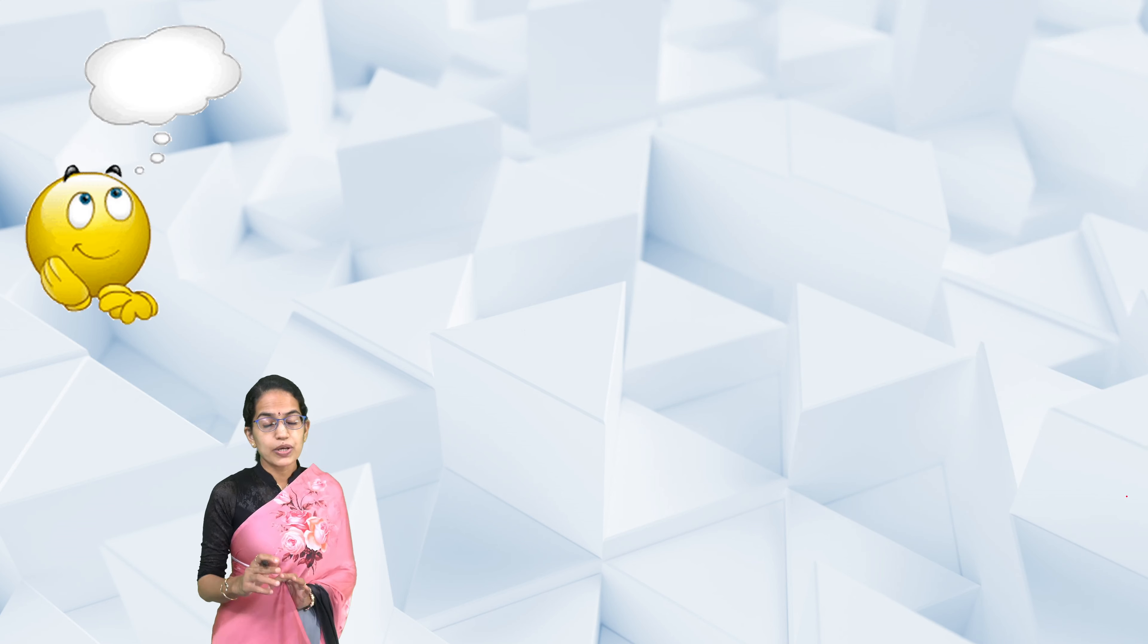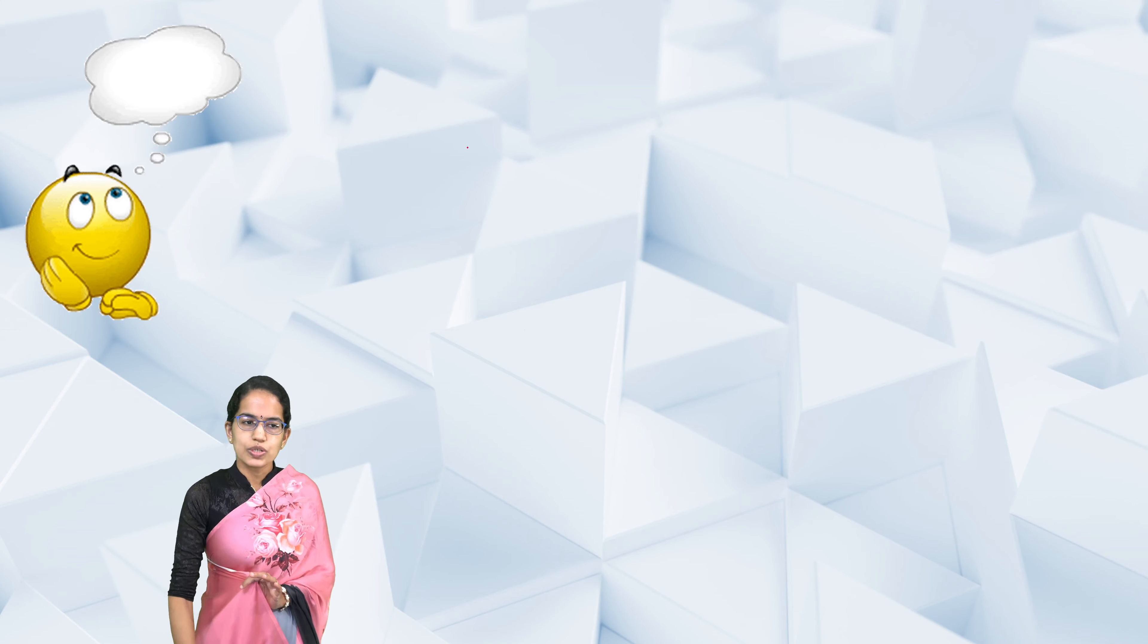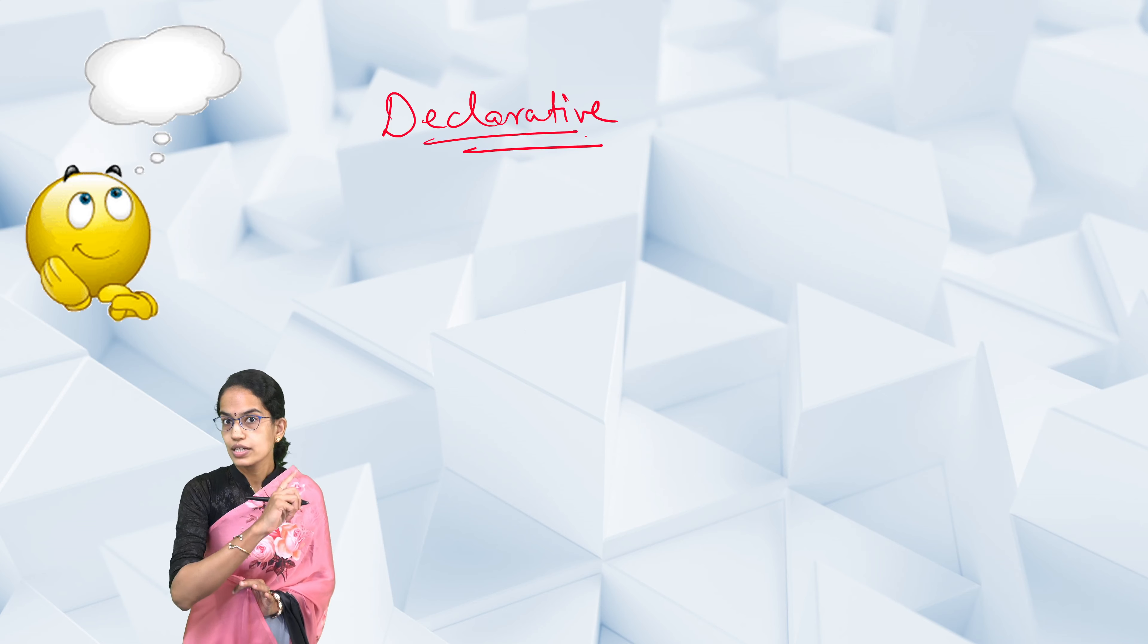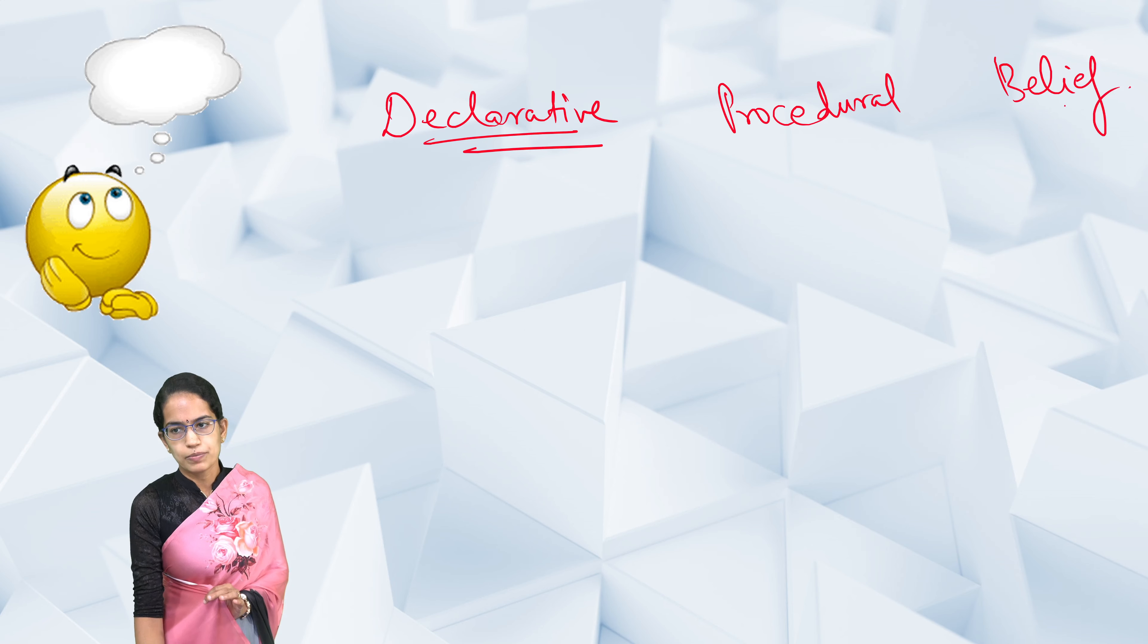Now, metamemory can be understood under three parts. The first component is declarative metamemory, similar to the declarative memory we've talked about, but it helps evaluate memory concepts. The next is procedural metamemory, and the third is belief metamemory.